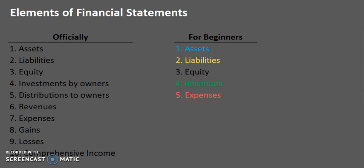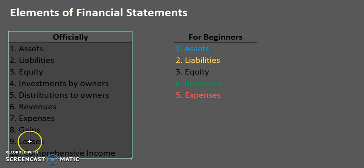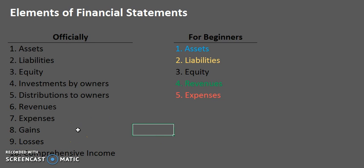Elements of financial statements. These are going to be one of the first things you memorize and practice during your first accounting semester. It is very important that you get familiar with the five account types we are going to discuss today, because they are going to come back over and over again, not only in this semester but in future semesters. Officially there are eight to ten different account types depending on whether or not you include gains or losses; however, as an introductory accounting student you are really only going to be dealing with these five.